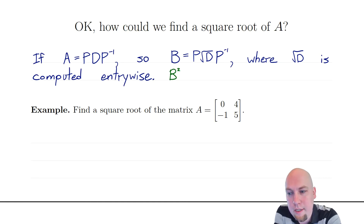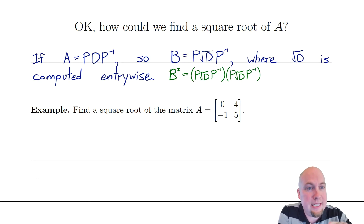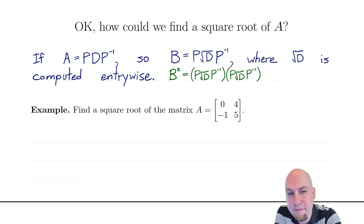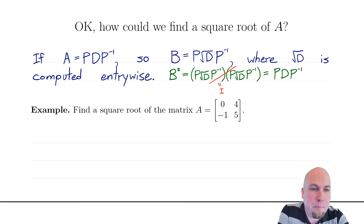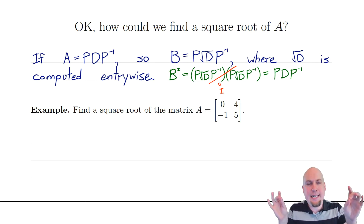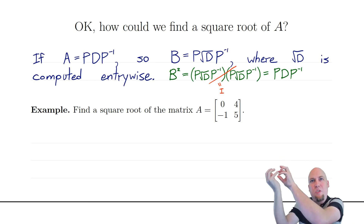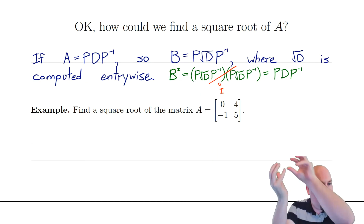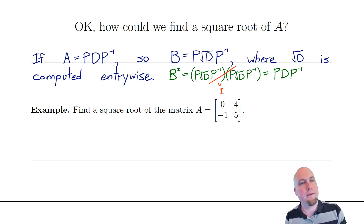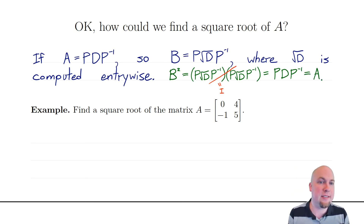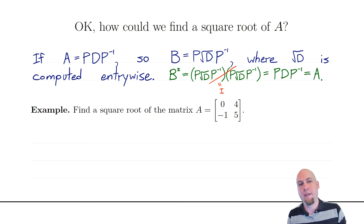To convince ourselves that B really is the square root of A, we just multiply B by itself and compute B squared. You get P root-D P inverse times itself. The P inverse and P in the middle cancel and give you an identity matrix. You're left with P on the left, P inverse on the right, and root-D times root-D. Because D is diagonal, you're just taking square roots of numbers and multiplying them together along the diagonal, so root-D times root-D is just D. And P D P inverse is just A — that's the diagonalization we started with.